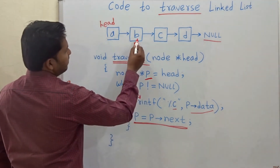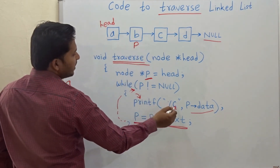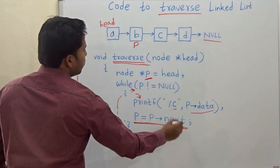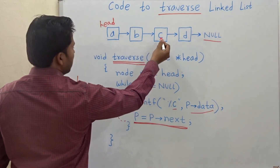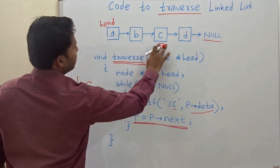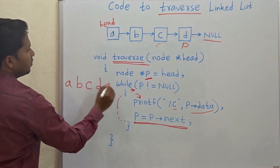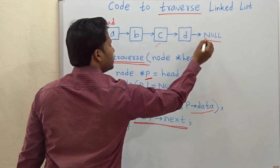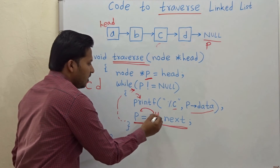Again, p is not equal to null, so we go inside and print data B, then move to the next node. We print data C and move to the next node, then print data D and move again. But the next node does not exist — it is null — so p becomes null.